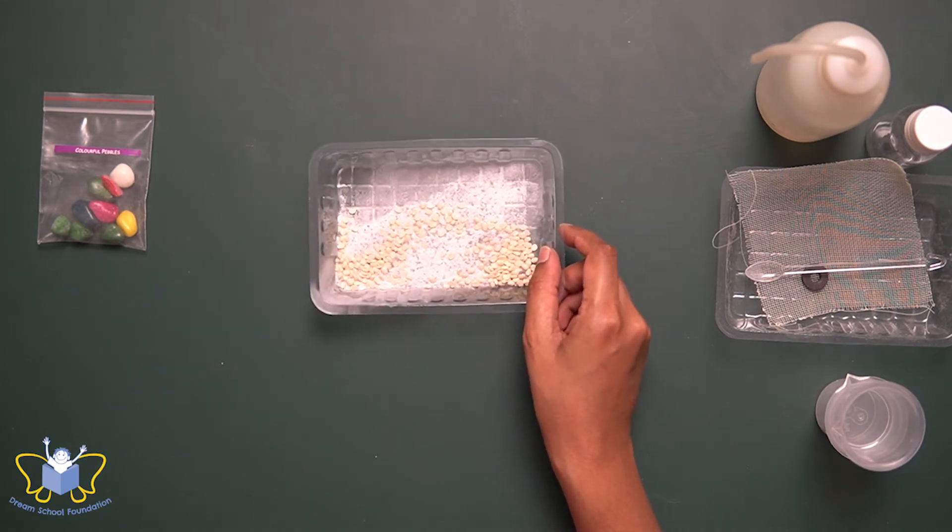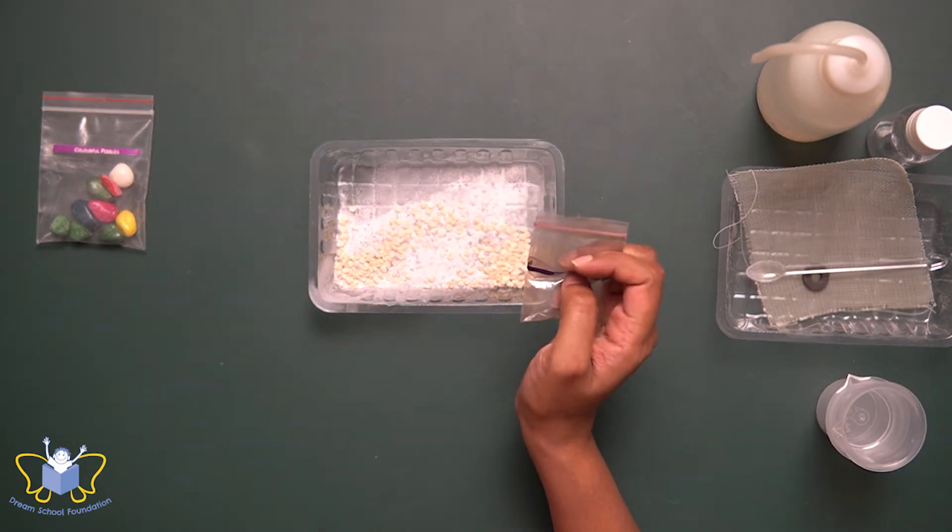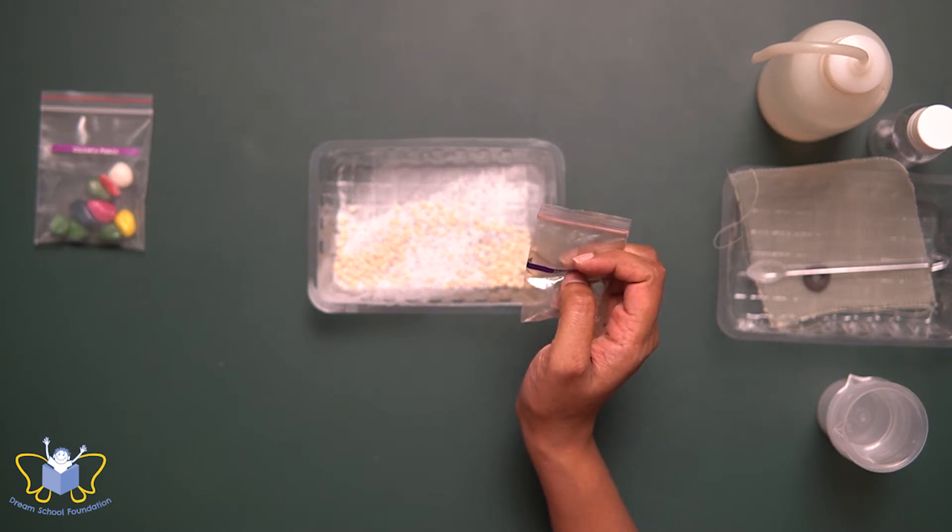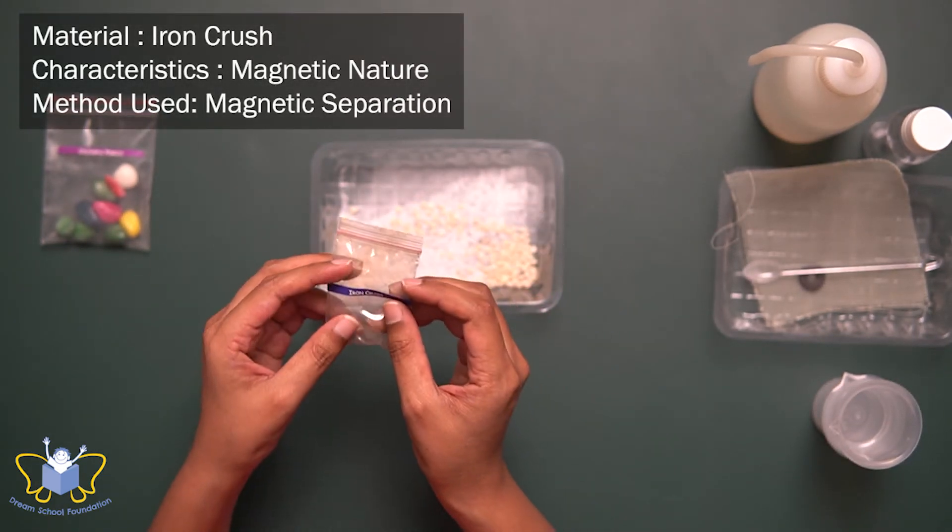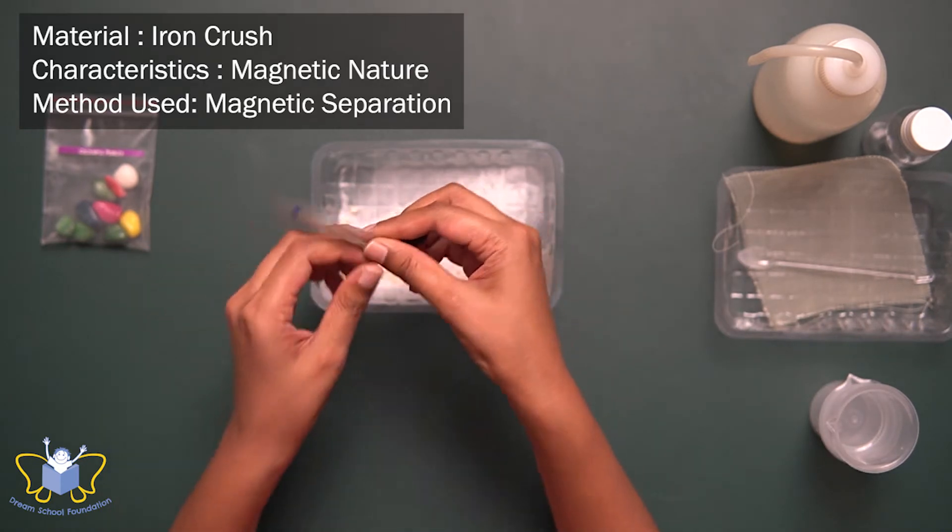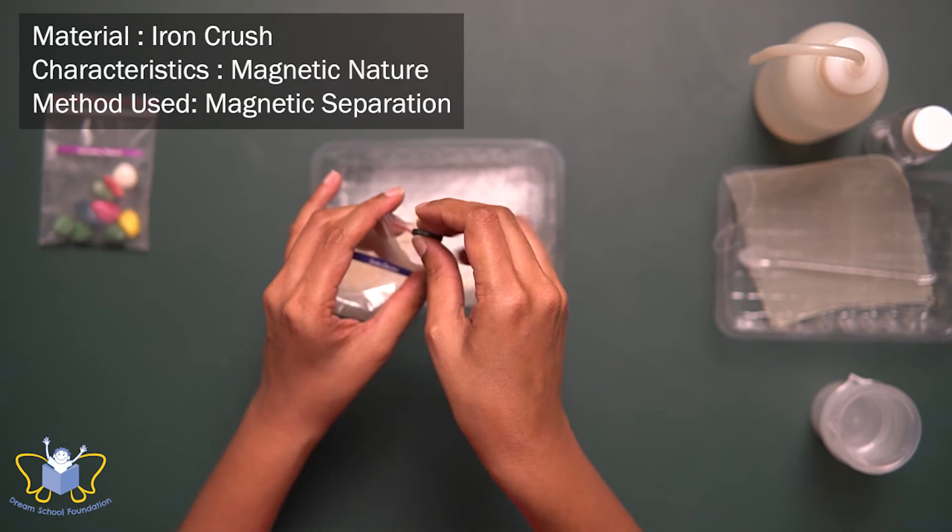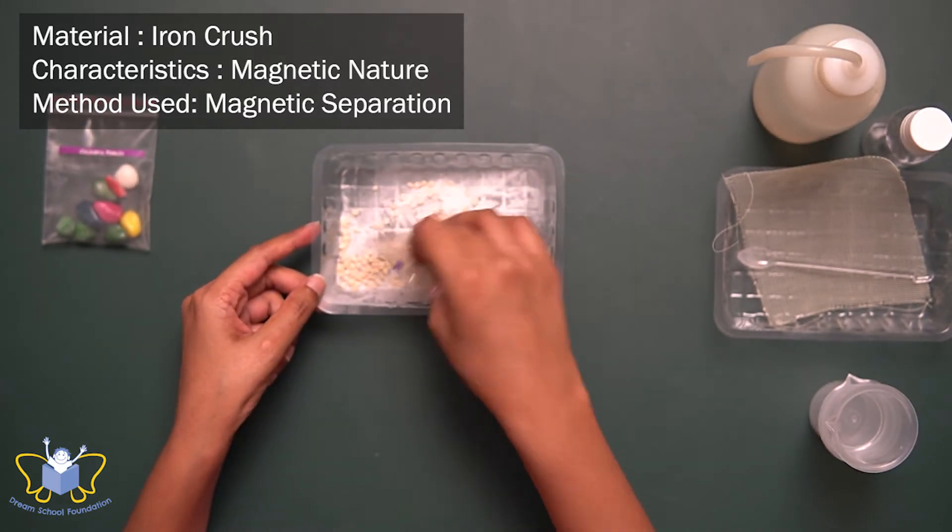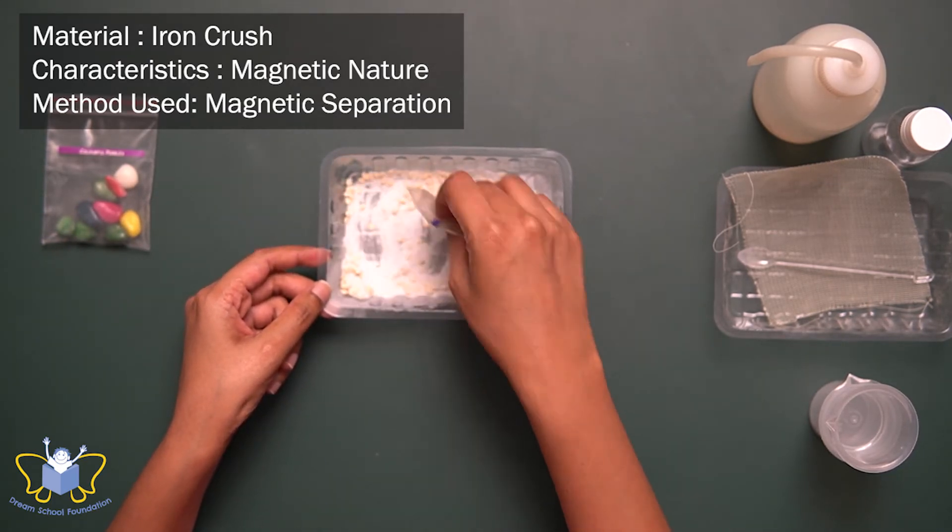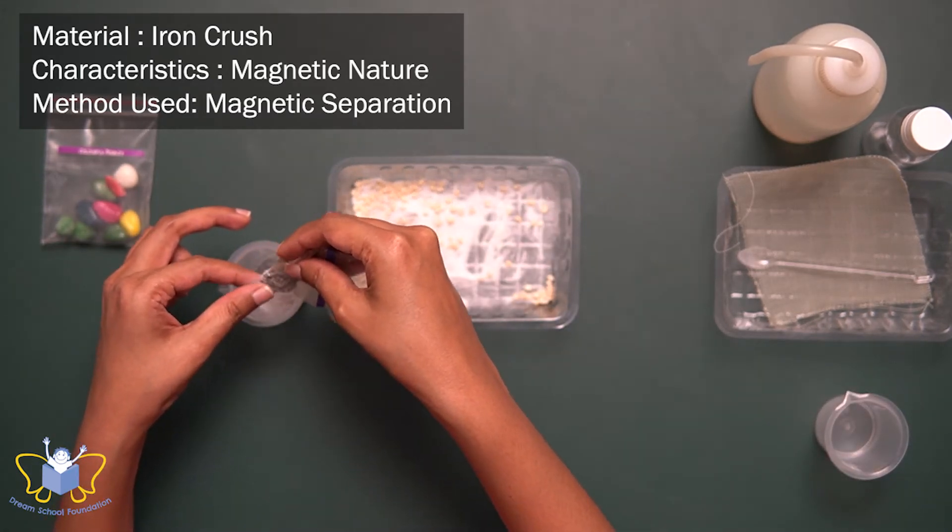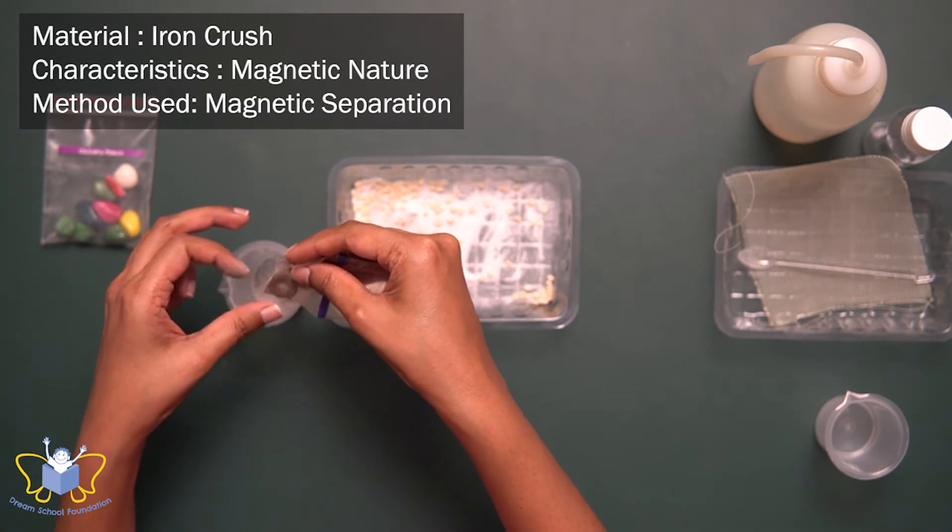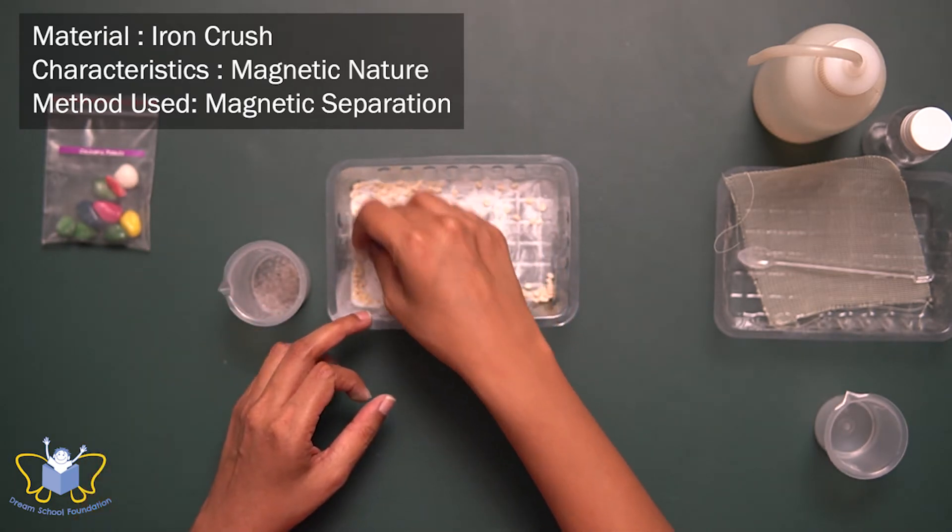So what do I separate next? I did add iron crush, right? And we are aware that iron is magnetic in nature, correct? Whereas the other substances are not. So whenever we are selecting a characteristic, we need to make sure that the other components do not have the same characteristic. As being magnetic is very unique to iron, I'm going to use a magnet to separate the iron crush. I'm going to put it in a ziplock cover so that it's easier to separate later on. Here you can see the iron crush separated from the mixture.